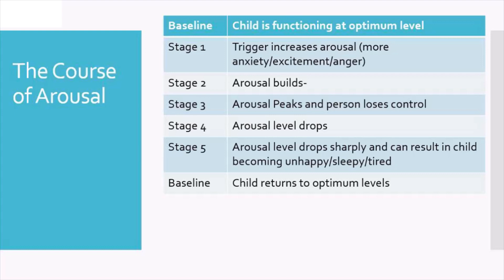Stage five is the arousal level dropping quite sharply. This is where you see your child presenting as unhappy, sleepy, tired — they might become quite withdrawn and still. That's when they've expended all of their energy and the behaviour is tailing off. Once they've had that space to replenish and calm, we go back to baseline again — your child presenting in a calm and relaxed way.